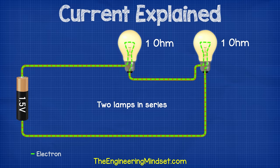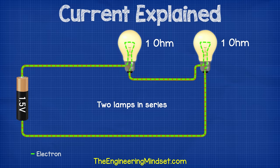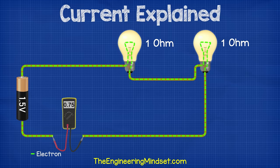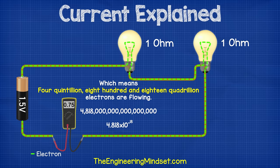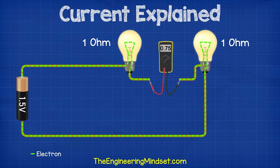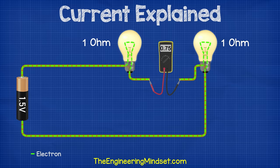If we add another lamp to the circuit connected in series, also with a resistance of one ohm, then we are adding more resistance to the circuit so the electrons are slowed down. In this case, we get a reading of 0.75 amps, which means four quintillion 818 quadrillion electrons are flowing per second. Because it's in series, we can move the multimeter and we get the same reading.